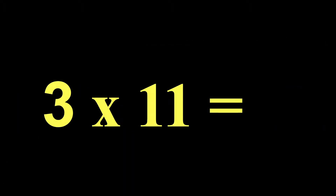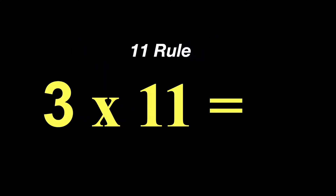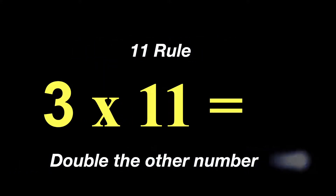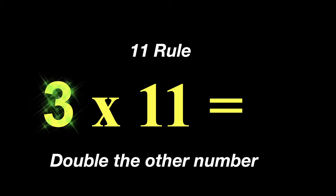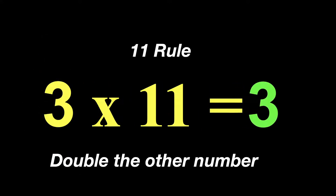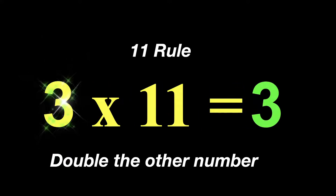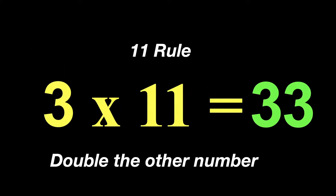3 times 11 — remember, that is our 11 rule. And we are going to double the other number. The other number is 3, and we are just going to double it. So 3 times 11 is 33.